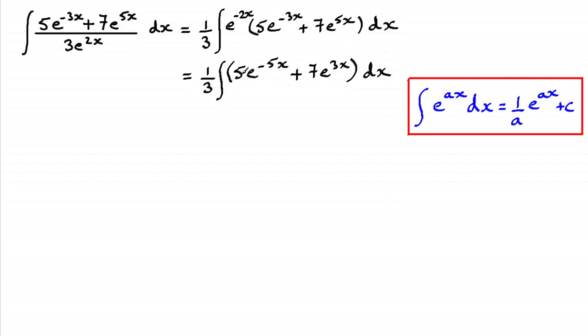So now I've got these terms, these two terms in the brackets and they're of this form here. So I should be able to integrate them then using this rule. If we do that, then you're going to get this for 5e to the minus 5x, 5e to the minus 5x over negative 5. The a value here was the negative 5. So we've got 1 over negative 5, which I've just written in the denominator here.